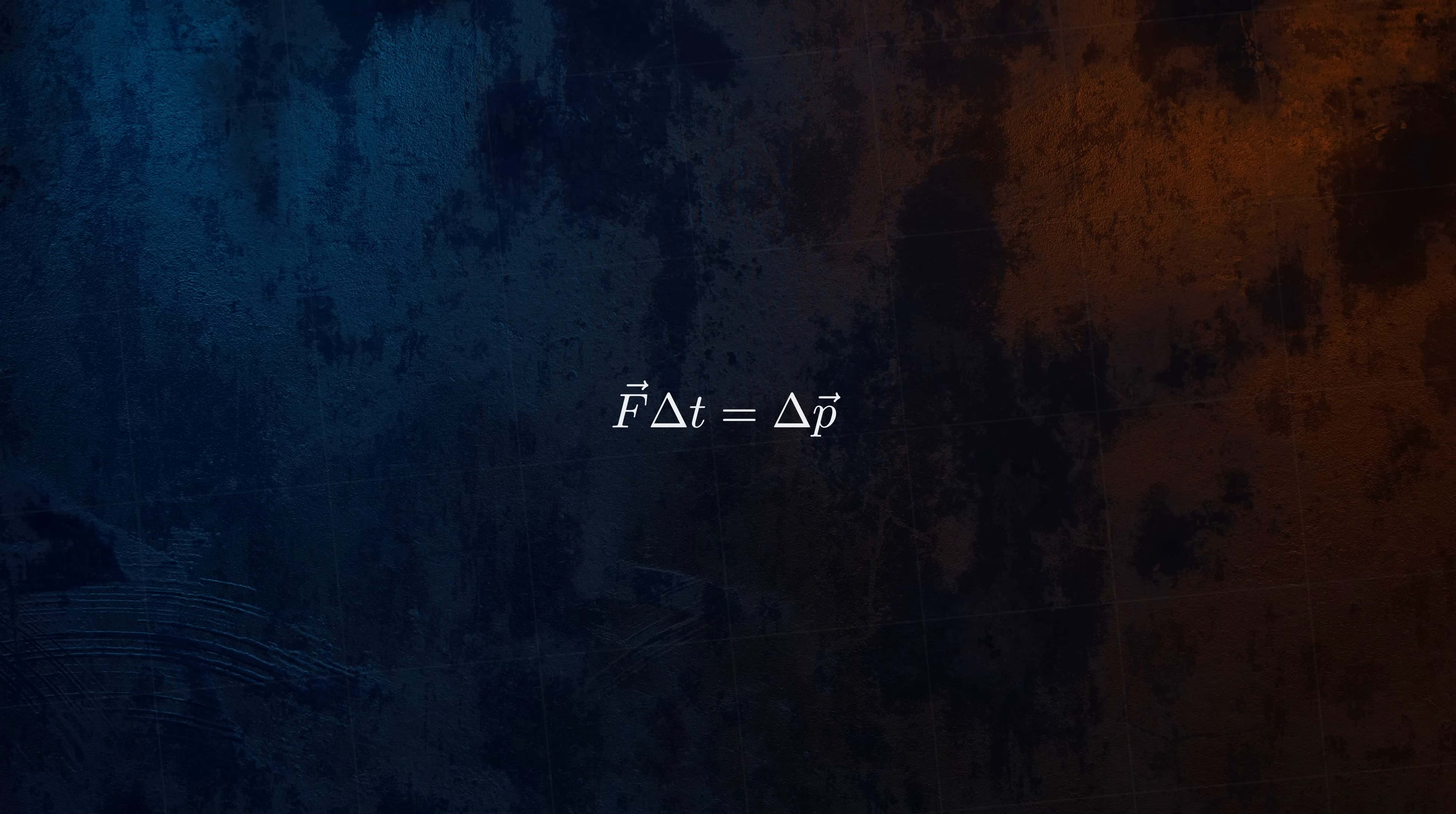The term on the left-hand side of the equation is called impulse. Denoted using the letter J, it represents the total effect of a force applied over a specific time period. It's a vector quantity, like force and momentum, so it has both magnitude and direction, and it has units of Newton's seconds.